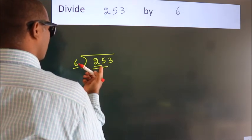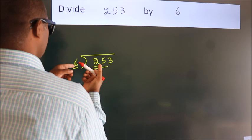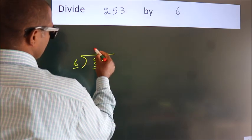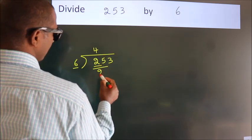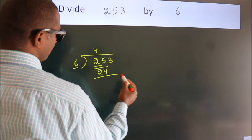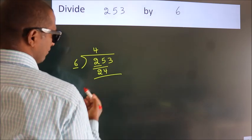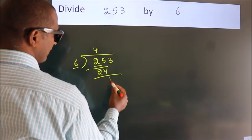A number close to 25 in the 6 times table is 6 times 4, which is 24. Now, we should subtract. We get 1.